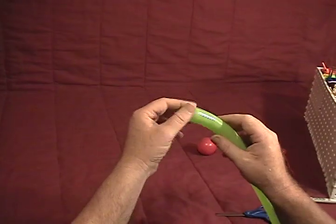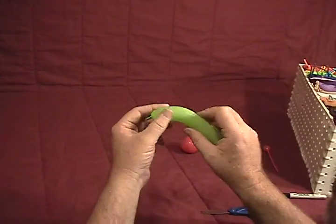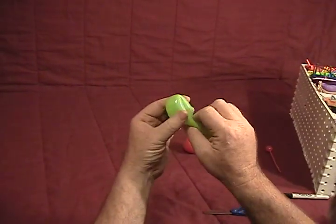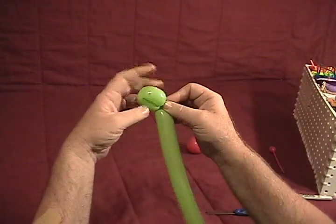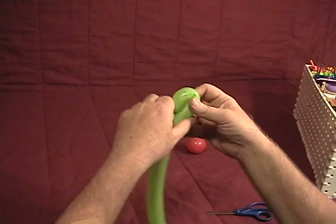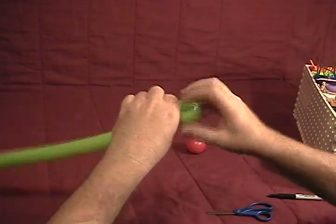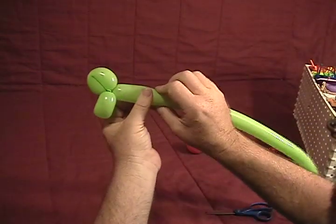Starting at our nozzle end, we're going to make a little fold twist using about a two inch bubble to a half inch bubble. Just like that. And then another fold twist the same size. That will be our mouth.